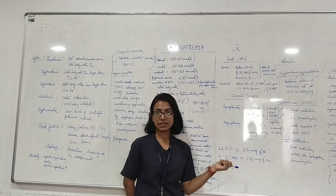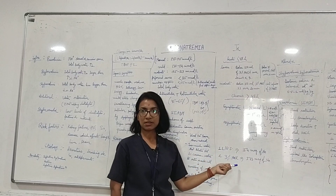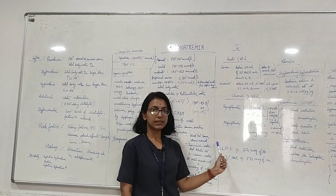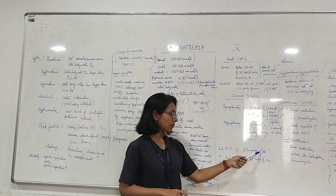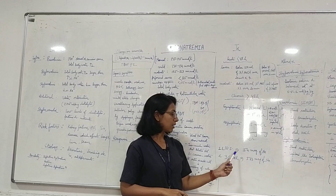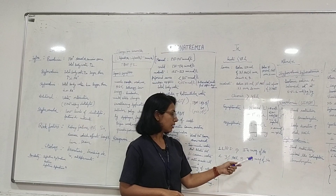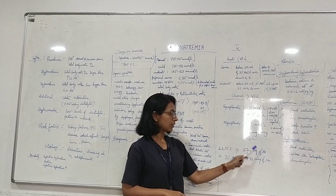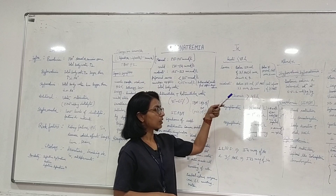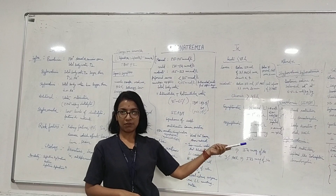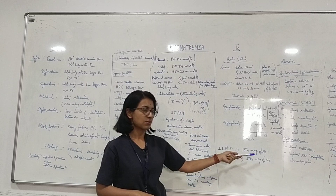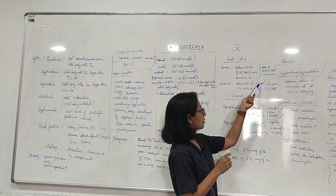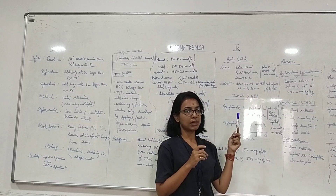It is important to distinguish between normal saline and three percent sodium chloride. One litre of normal saline has 154 milliequivalents of sodium, while three percent sodium chloride has 513 millimole equivalents of sodium. That is why we specifically mention which type of sodium chloride we are giving to the patient, as there is a significant difference in sodium concentration. Three percent sodium chloride is called a hypertonic solution.